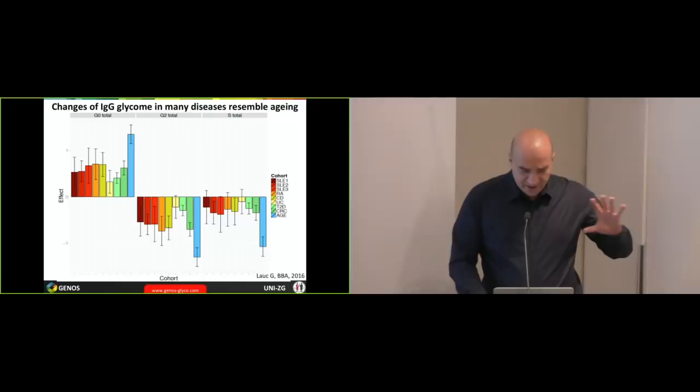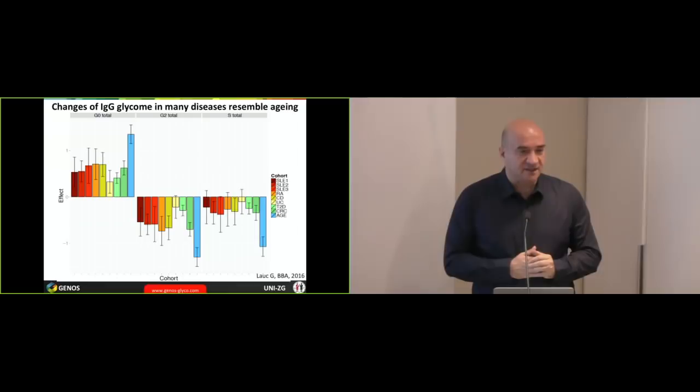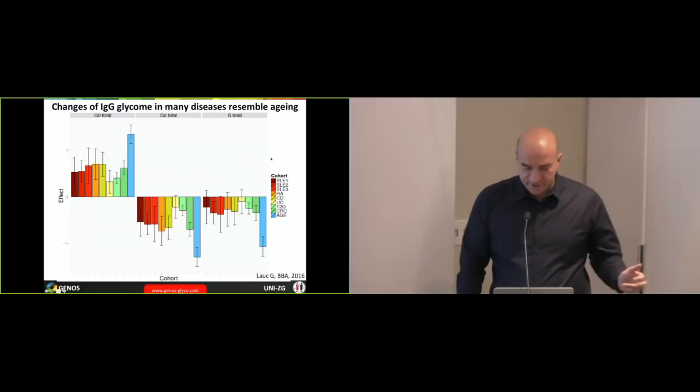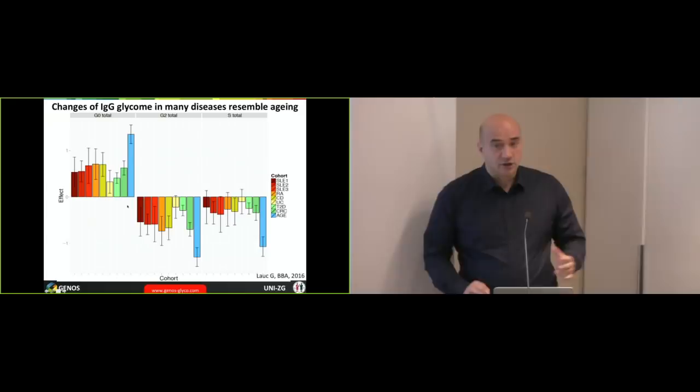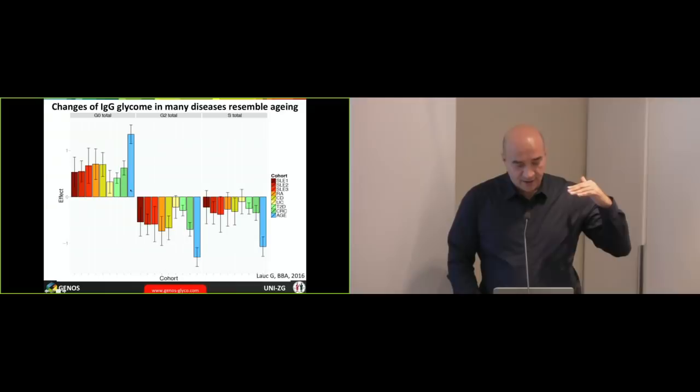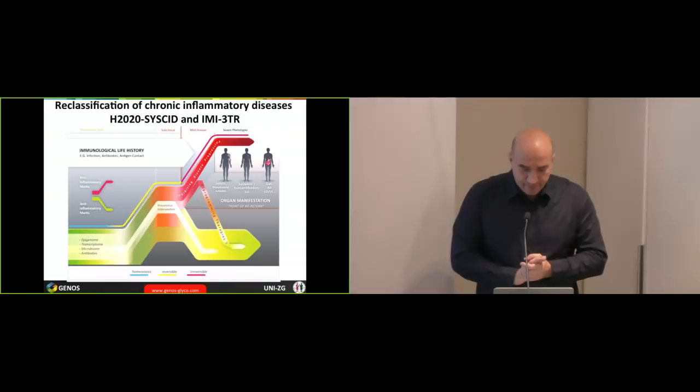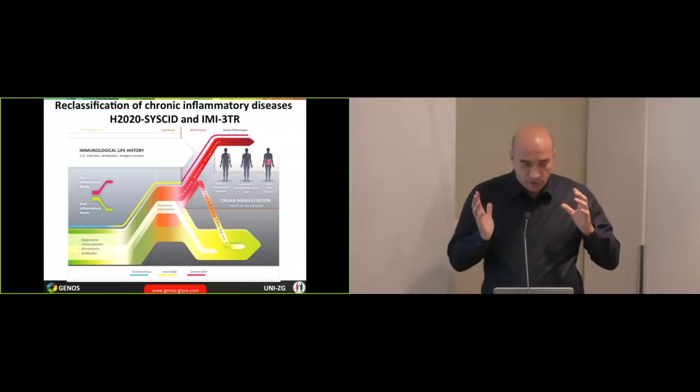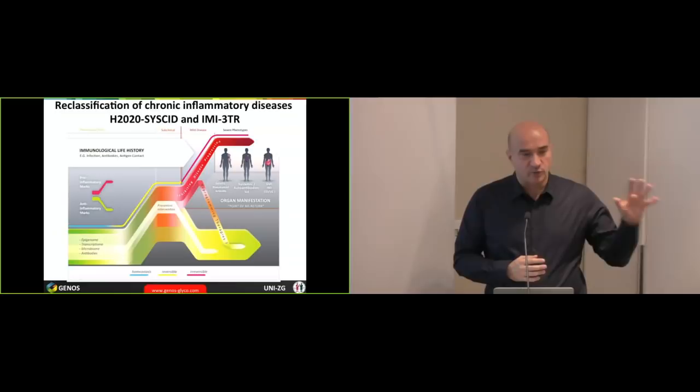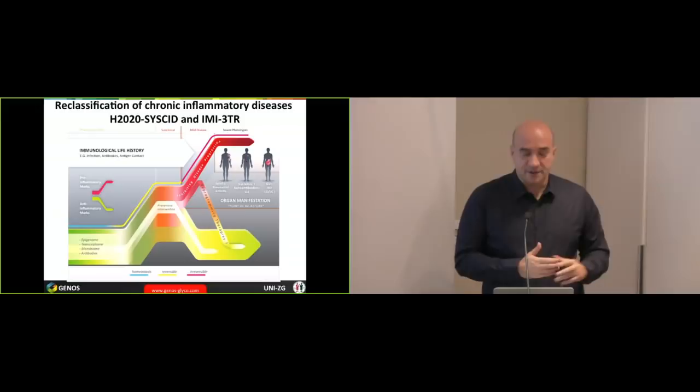But as I mentioned several times already, glycans associate with many different diseases. And actually, they associate in a very similar way with many diseases. So what we look here, these are lupus, rheumatoid arthritis, Crohn disease, ulcerative colitis, type 2 diabetes, colorectal cancer. And they all go in the same direction. And actually, they go in the same direction as aging. So older people change in a pro-inflammatory way. Their IgG becomes more pro-inflammatory. And probably what we see here, we see an increase in low-grade chronic inflammation, which is believed to play an important role in many different diseases. And actually, at the moment, there are big attempts to reclassify all inflammatory diseases, because currently we classify them based on the organs and based on the symptoms. But actually, we should be thinking about molecular mechanisms. So we are part of two large projects. One is SYSCID and one is 3TR in Europe, where we actually try to reclassify patients based on molecular symptoms. And one of the things we think is important is this low-grade chronic inflammation, which we see to develop with aging.